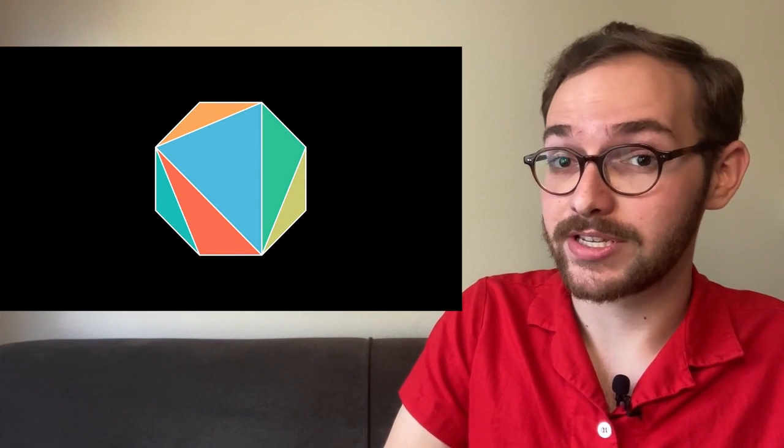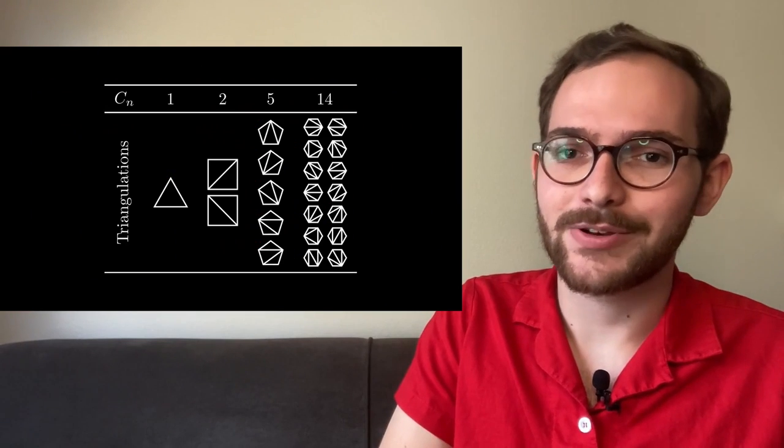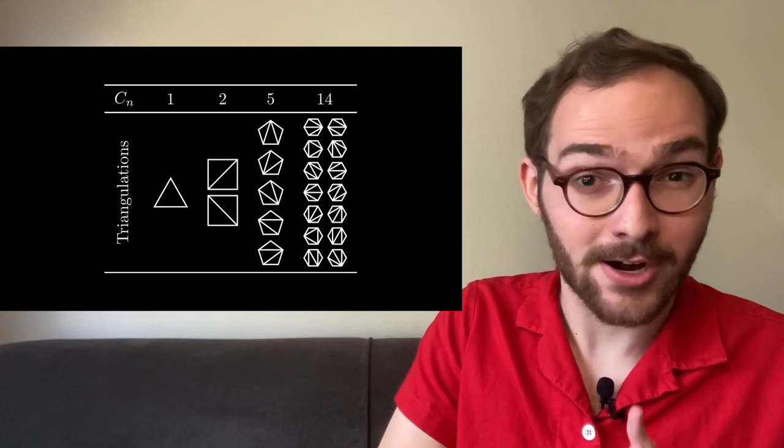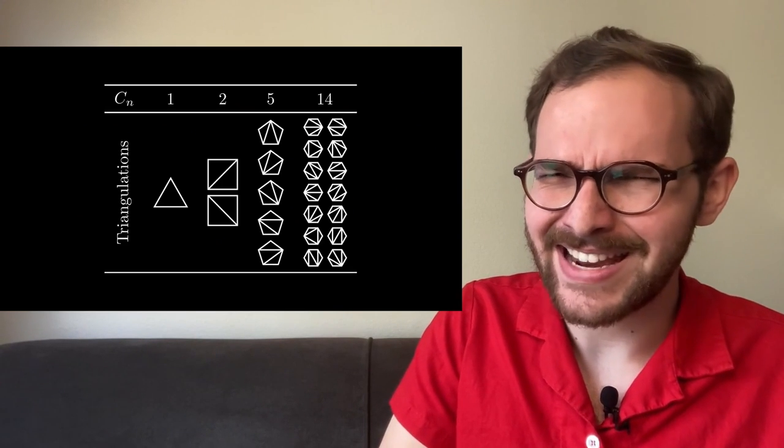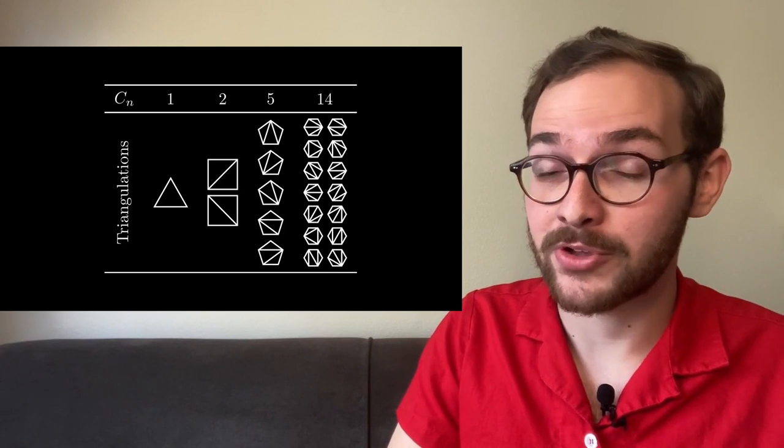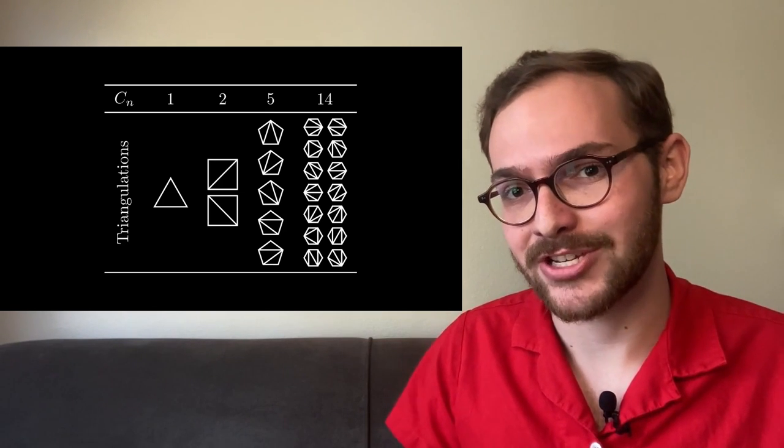To triangulate a polygon, you want to partition it into triangles without adding any new vertices. Triangulations show up all over computer science and especially in computer graphics. If you start counting up all the ways you can triangulate an n-gon, you'll notice quickly that our friend is back. But I don't see any obvious binary tree structure on the triangulations. Instead, we're going to match up the triangulations with parenthesizations.